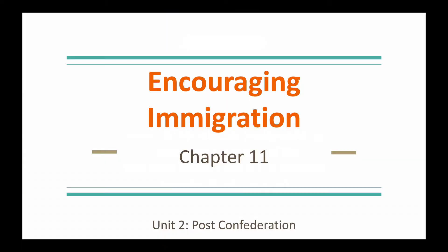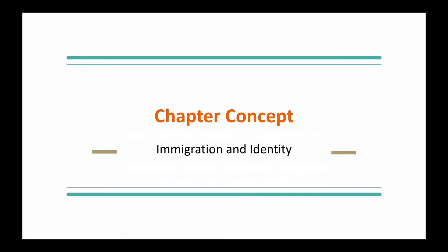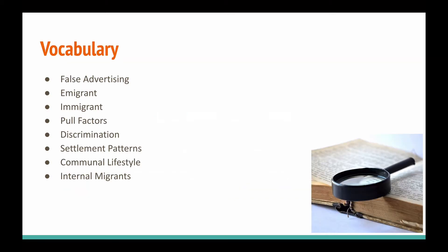All right, it is Lesson 11.1, the beginning of Chapter 11: Encouraging Immigration. The inquiry question we are going to answer this time around: how did the massive immigration to Canada near the turn of the 20th century affect the complex identity of our country? Our chapter concept this time around is Immigration and Identity.